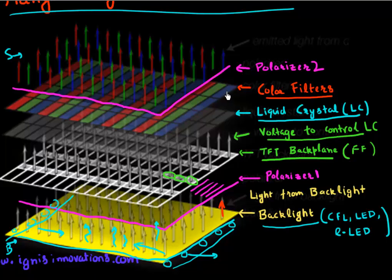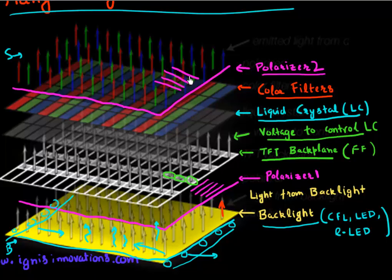This is a very inefficient way because we are generating white light and then rejecting all the other components, just letting the red, green, and blue components pass through. On the very top, we have a polarizer layer again. The unique thing about this polarizer is that it has an opposite, or 90-degree orthogonal, polarization compared to polarizer one. These two polarizers, in conjunction with the liquid crystal, determine whether the light passes through or not.